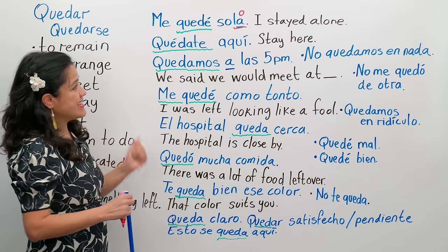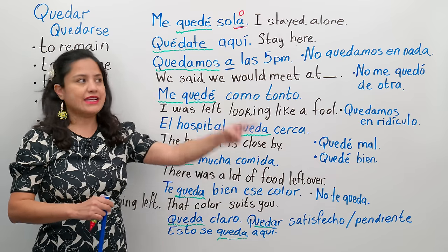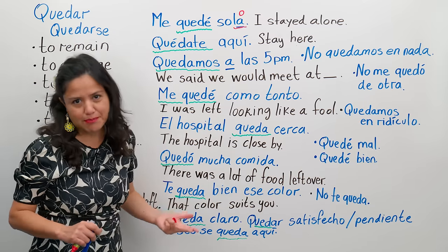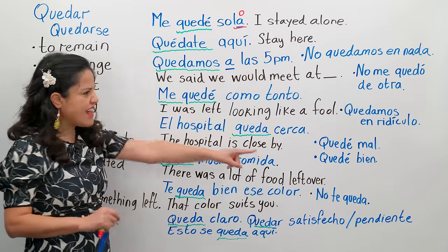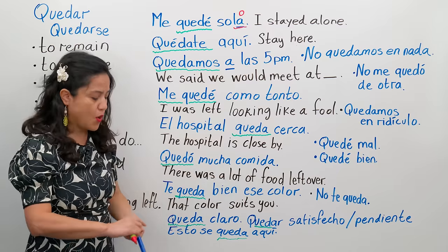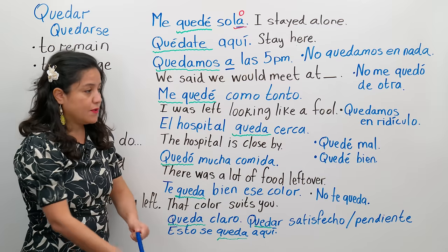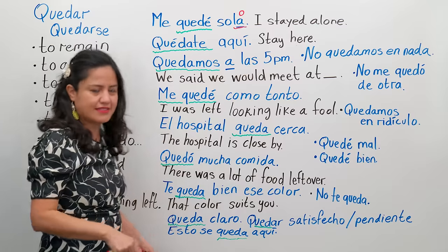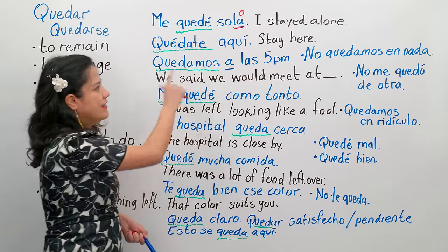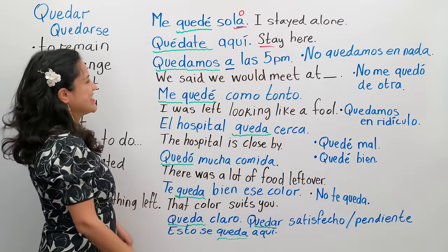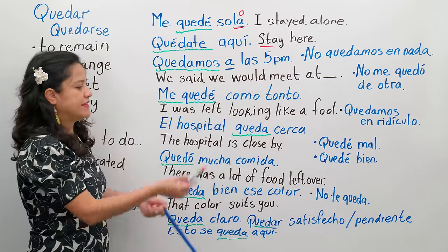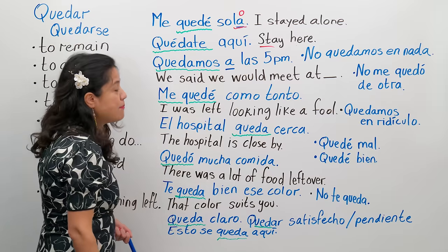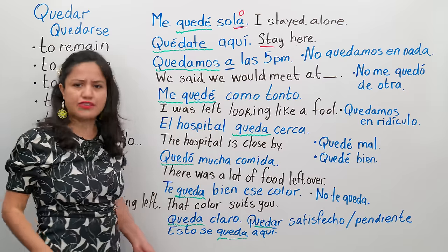La siguiente es una orden — the next one is an order. Quédate aquí. Stay here. It's an order: Quédate aquí — no te muevas, don't move. That doesn't matter if it's Ana or Pedro — you still give the same order to that person. Quédate aquí, Pedro. Quédate aquí, Ana. No te muevas — don't move.